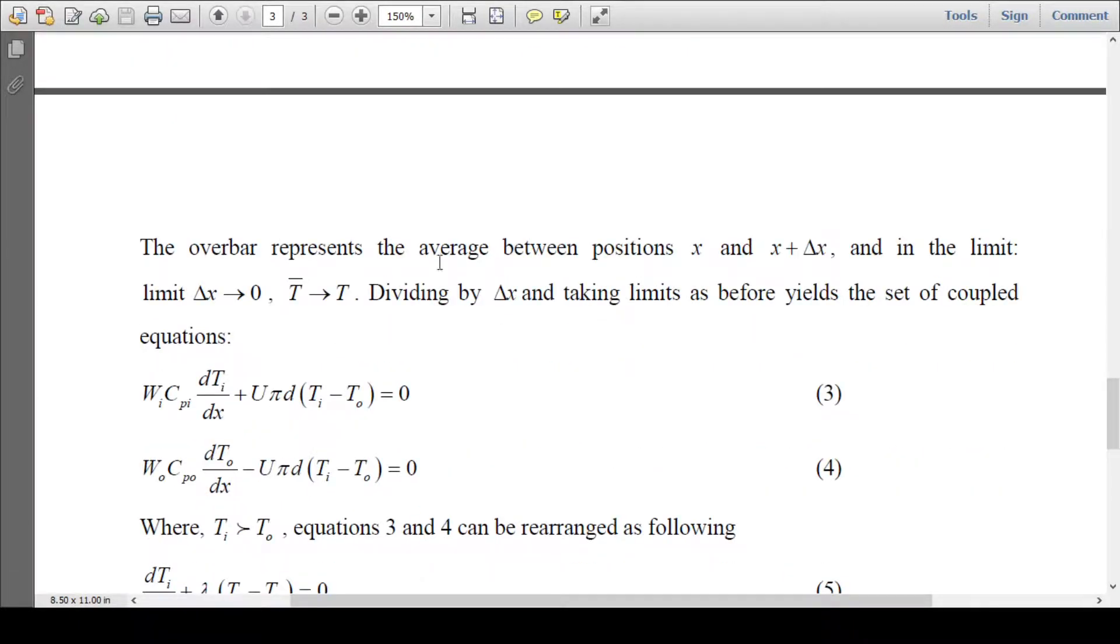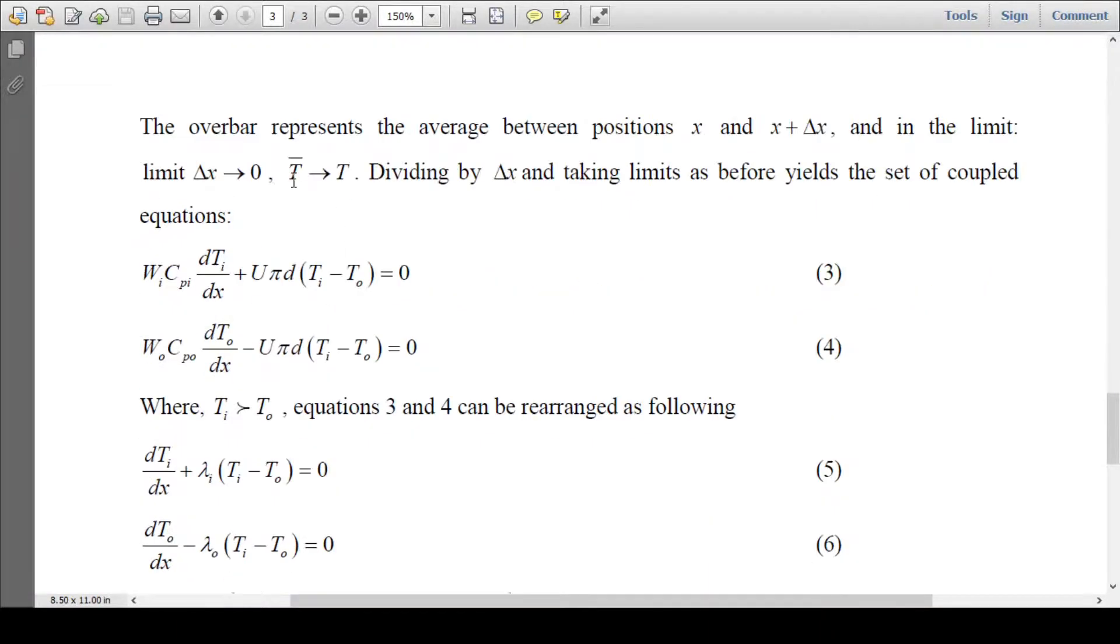The bar represents the average temperature between the positions x and x plus delta x. By taking the limit as delta x tends to zero, T bar tends to T. Dividing by delta x and taking limits as before yields the set of coupled equations.